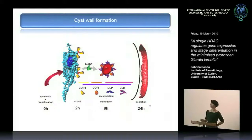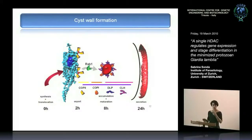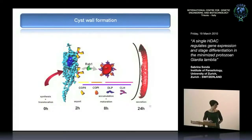The time plan of this secretion: synthesis and translocation occur in the ER, then COP2 and COP1 secretion components mediate the budding of these vesicles. RAB1 is also involved, and when the ESVs are formed, maturation of their components takes place inside them before secretion — including trimming and processing. Clathrin and dynamin are involved to allow accumulation and secretion of this material. The entire process is complete within 24 hours, with a peak of synthesis of these proteins at 8 hours post-induction.